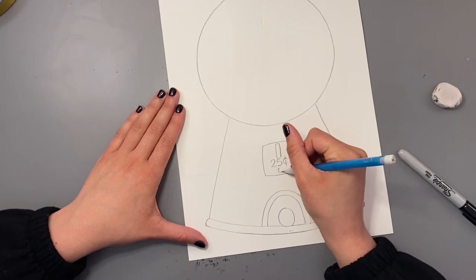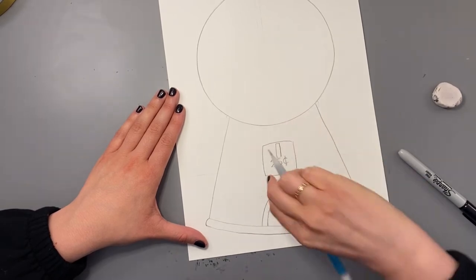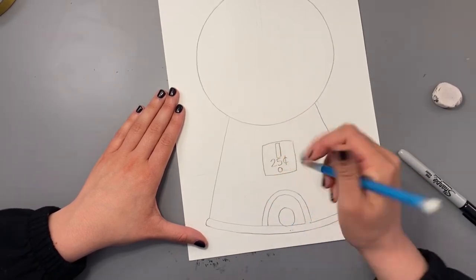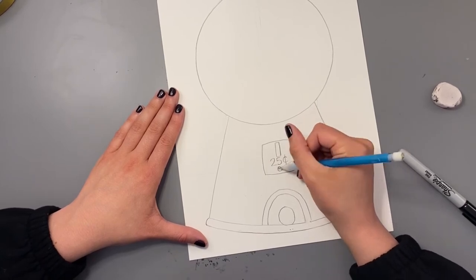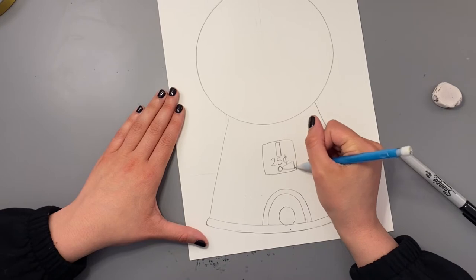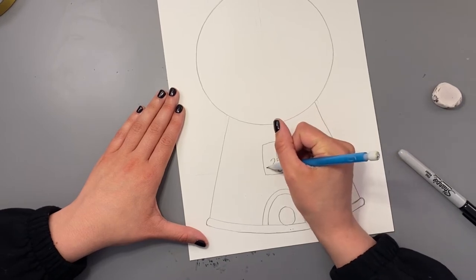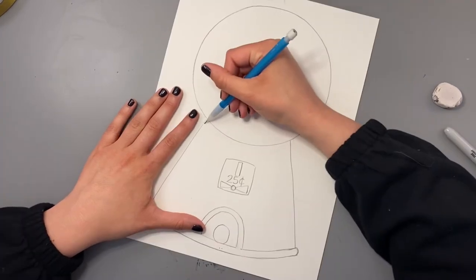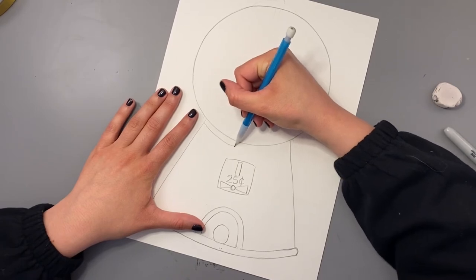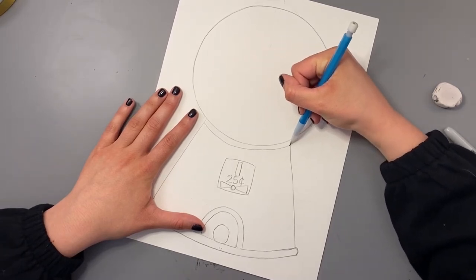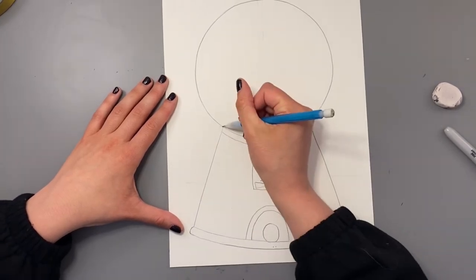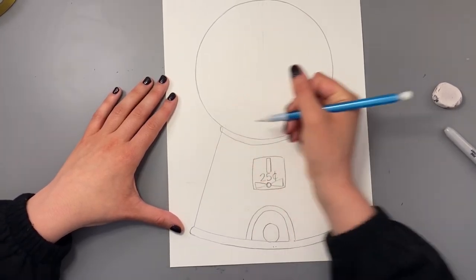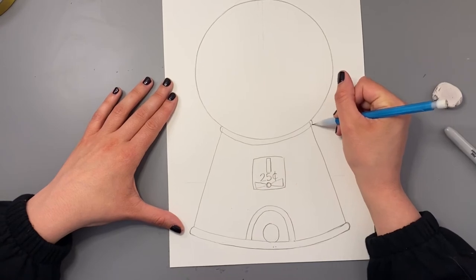And then we're going to put a little dial here at the bottom where you would turn to bring your coin into the machine. So I started with a little circle and then two triangles on the sides. I'm also going to add another curved line across the top of the base. It just kind of follows the shape of the circle. And then two little curves on the side to give it a rounded edge.